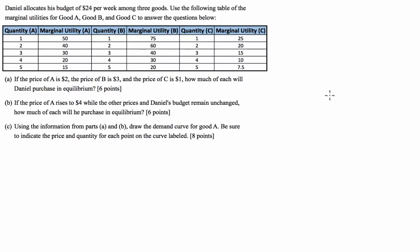Our question is that Daniel allocates his budget of $24 per week among three goods. We use the following table for the marginal utilities of goods A, B and C to answer three questions. If the price of A is $2, the price of B is $3 and the price of C is $1, how much of each will Daniel purchase in equilibrium? Equilibrium means how much of each good will be in Daniel's bundle which maximises his total utility.